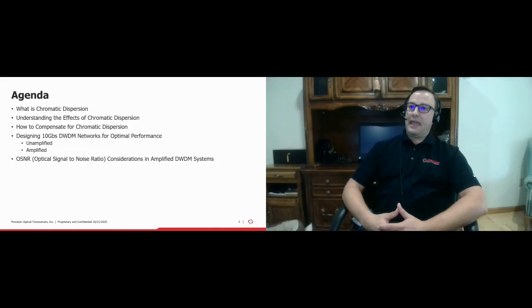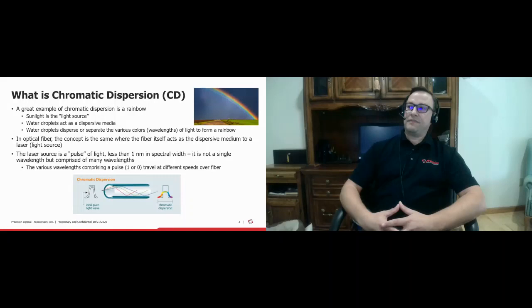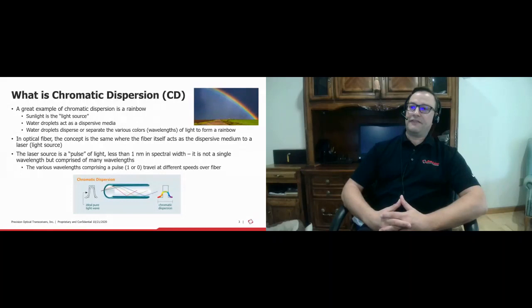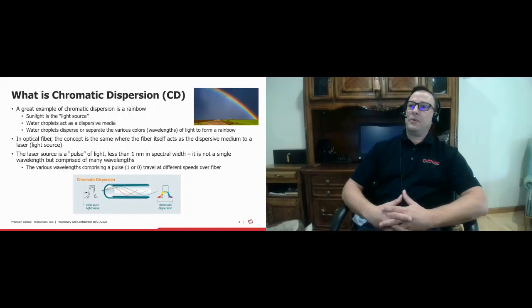So what is chromatic dispersion? The simplest way is to look at a rainbow. Sunlight — think of it as your laser source — hits water droplets, which act as a dispersive medium, separating the various rays of light into their individual components or colors. Everyone's familiar with ROYGBIV. The raindrops act as that dispersive medium, separating out the various colors of light. In optical fiber, the concept is exactly the same.